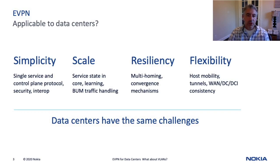eVPN was originally developed to address emerging needs in carrier networks such as the simplicity of a single control plane for both L2 and L3 services, scalable service state and efficient address learning, improved and open multi-homing for resiliency, and flexibility for host mobility, data center interconnect, and WAN services. Data centers have many of these same challenges and therefore can benefit from adopting eVPN.